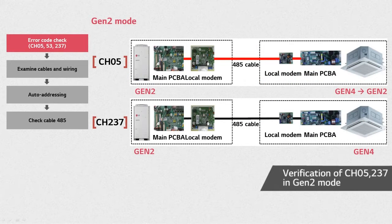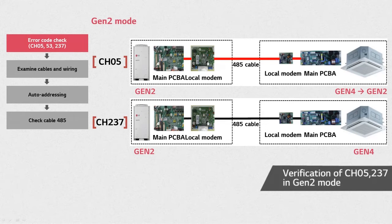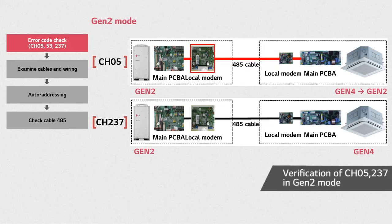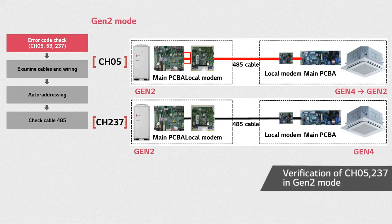When the IDU and ODU are set in Gen2 mode, CH05 indicates an error between the indoor unit main PCB and ODU main PCB. When error CH05 occurs, first, check the connection between the indoor unit local modem and the main PCB. Second, check the local modem state. Third, check the 485 cable between local modems. Fourth, check the outdoor unit's local modem. And finally, check the connection cable between the ODU's main PCB and local modem.